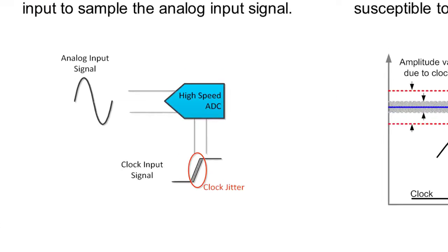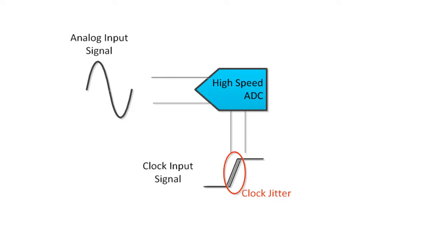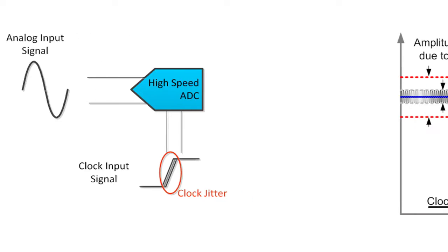In the sampling theory, the high-speed ADC samples the input signal using an external clock signal. The clock edges have timing uncertainty, typically called jitter, which degrades the noise performance of the ADC.